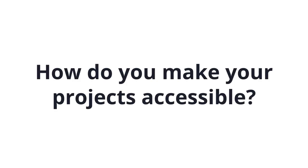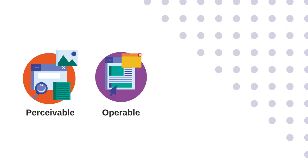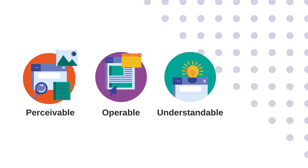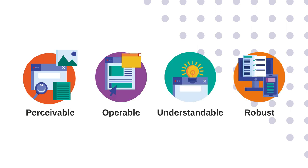So how do you make your projects accessible? The Web Content Accessibility Guidelines include a really useful set of principles for tracking digital accessibility. They say that content should be perceivable, operable, understandable, and robust, which nicely translates down to the acronym POUR. Let's go through these together and talk about specific tips for how you can meet these principles in your own work.